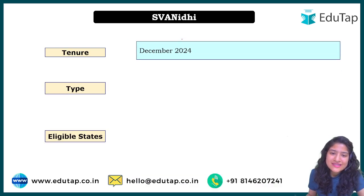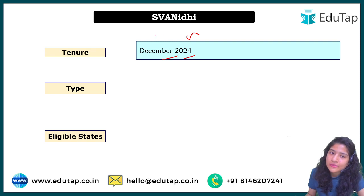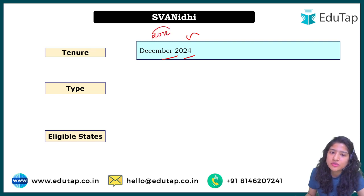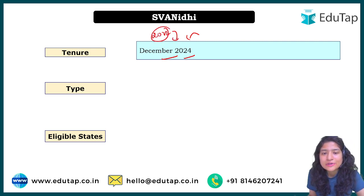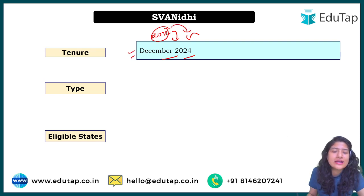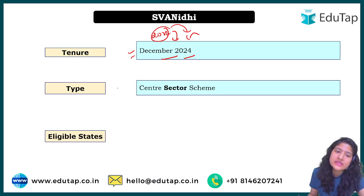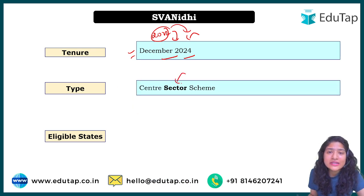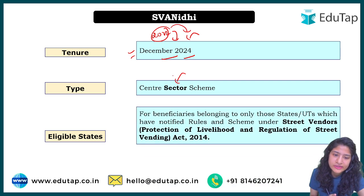The tenure of this scheme has been extended to December 2024. Initially it was till 2022, but when we reached that timeline the government decided to extend it till December 2024. In terms of type, it is a Central Sector scheme — meaning it is fully funded and fully backed up by the central government.